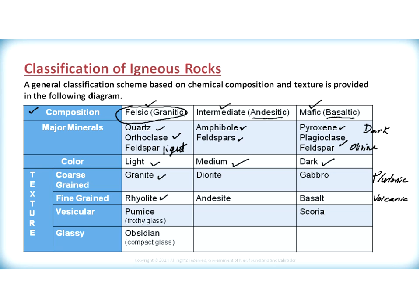Looking at the two equivalent rocks for intermediate composition, we have diorite and andesite. Diorite forms in a plutonic environment so it would be coarse-grained, and andesite forms in a volcanic environment and therefore would be fine-grained. In a mafic composition, gabbro forms in a plutonic environment being coarse-grained, and basalt forms in a volcanic environment being fine-grained. The only difference between these pairs of rocks is their texture, because they form in different environments.